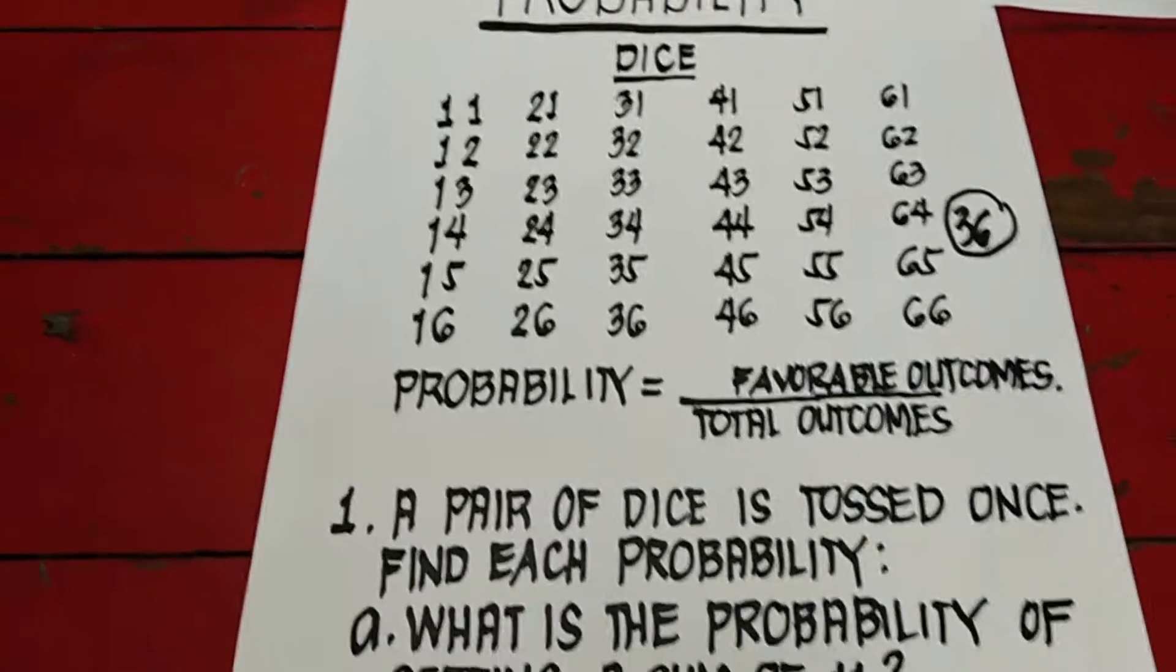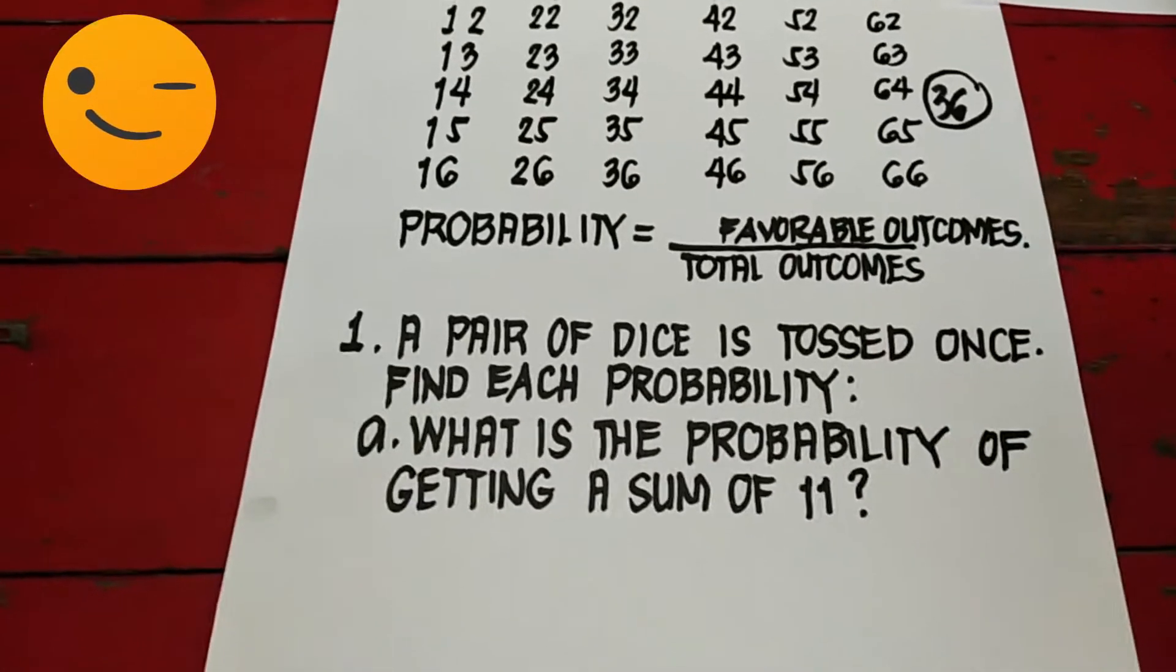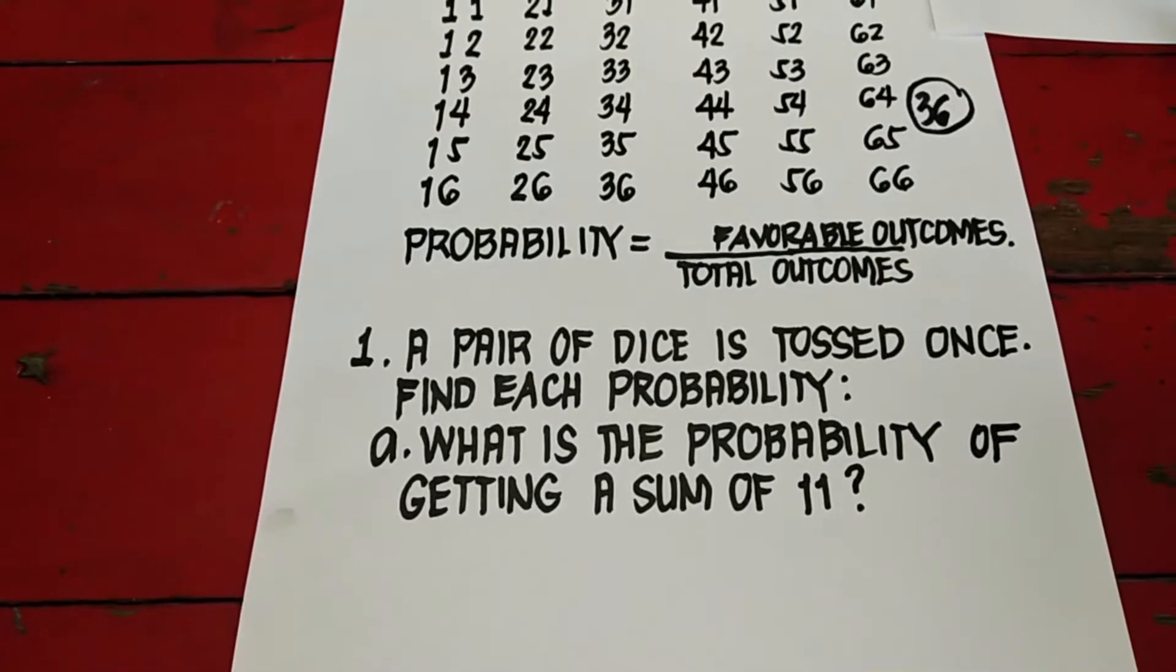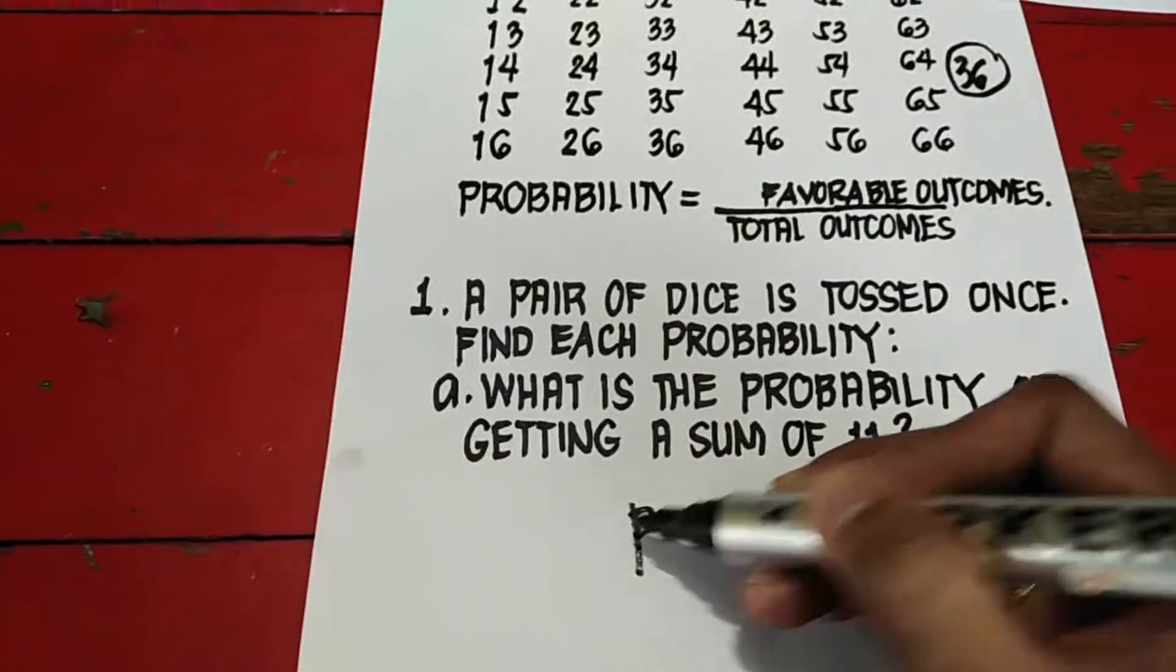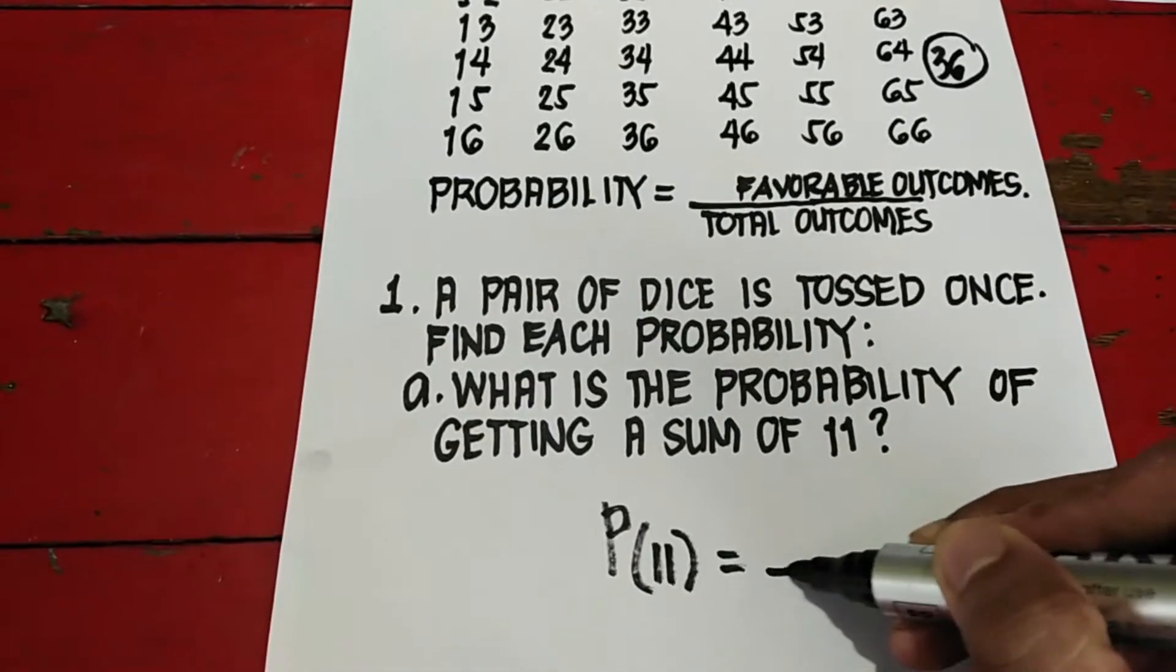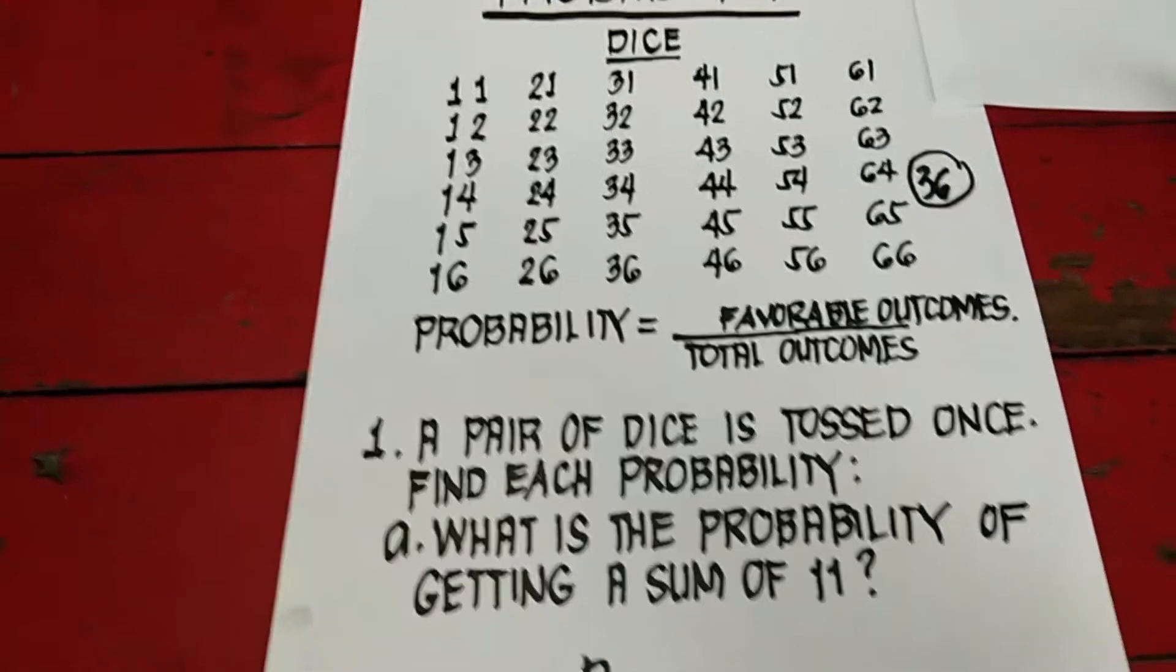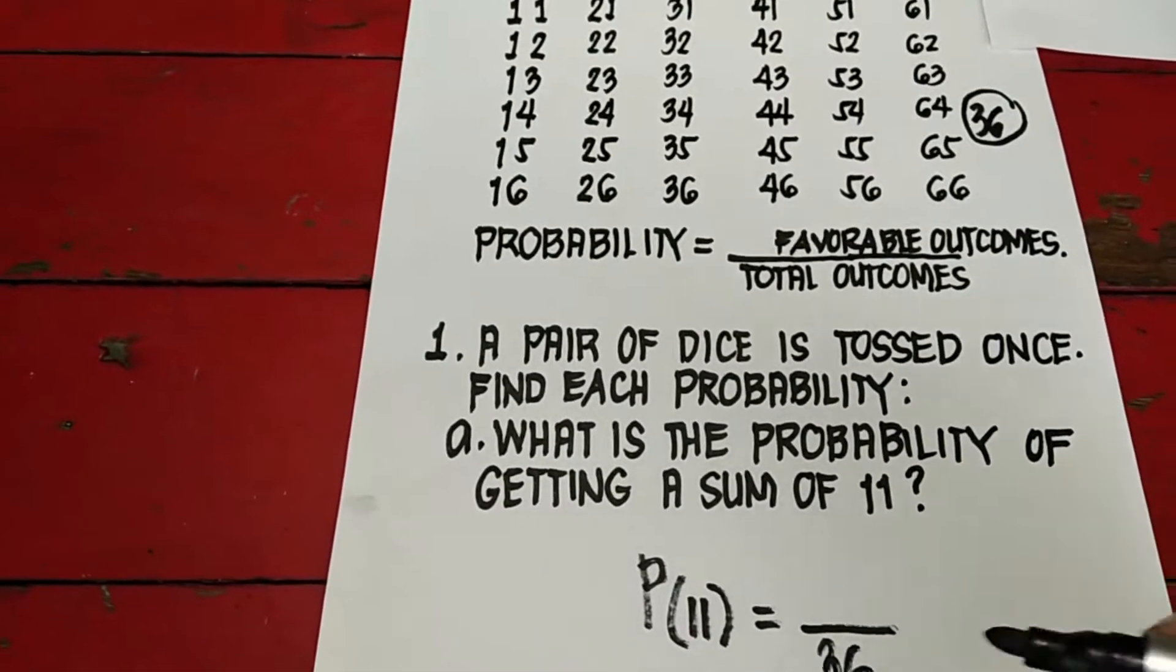Example number 1. A pair of dice is tossed once, find each probability. A, what is the probability of getting a sum of 11? So fraction tayo. Sa baba is the total outcome. Ilan yung outcomes natin sa dice? They are 36. So ilalagay mo na sa baba is 36.